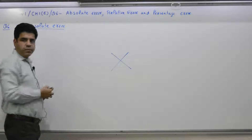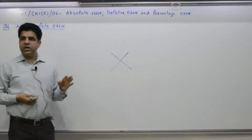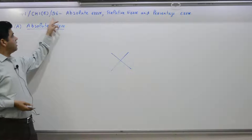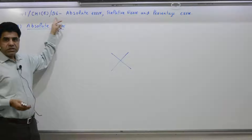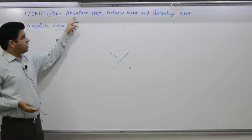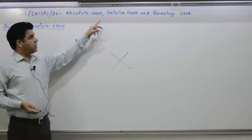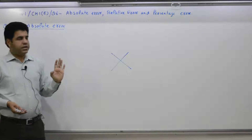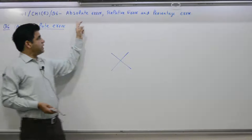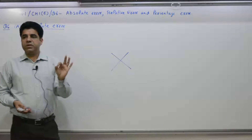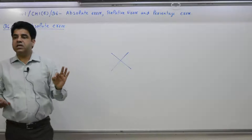Question number 6, chapter 1e, which deals with error. Question number 6 deals with absolute error, relative error, and percentage error. We will explain all these three aspects by using one example.